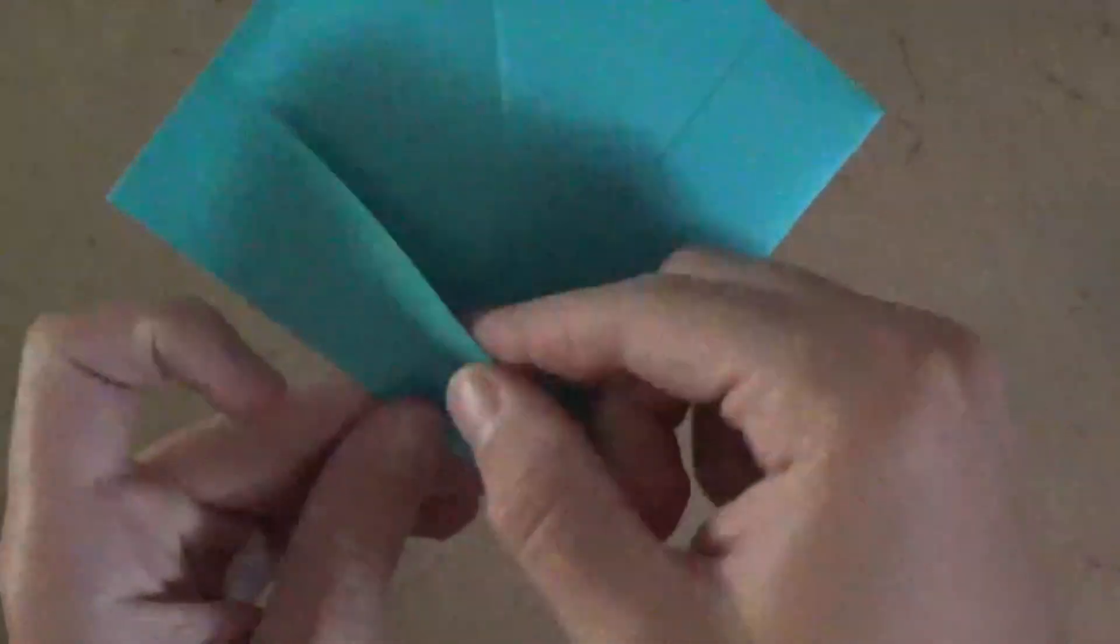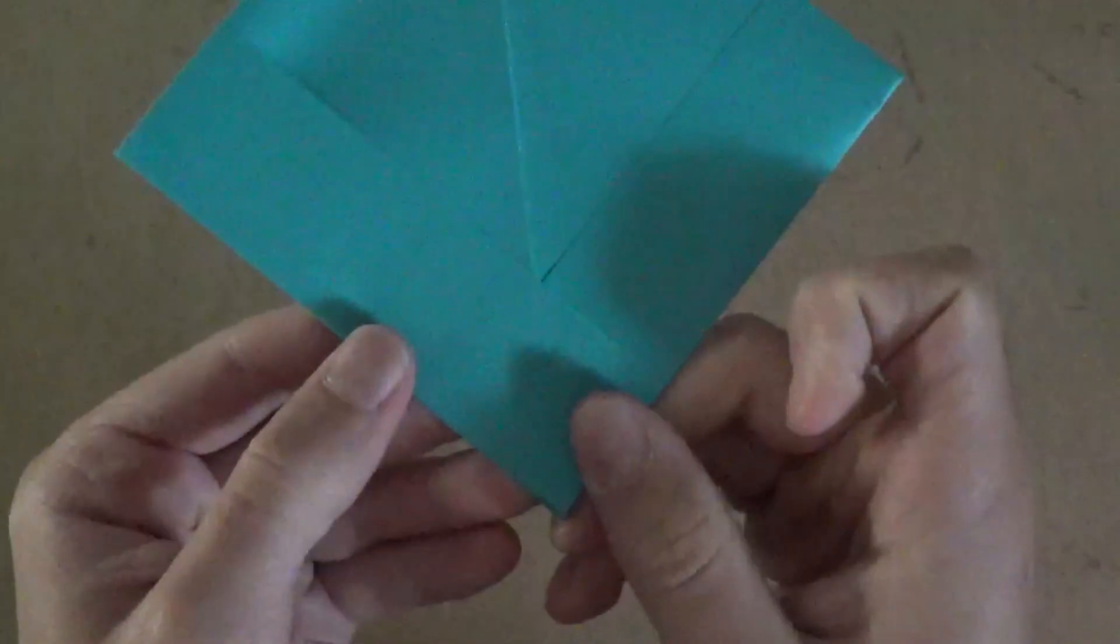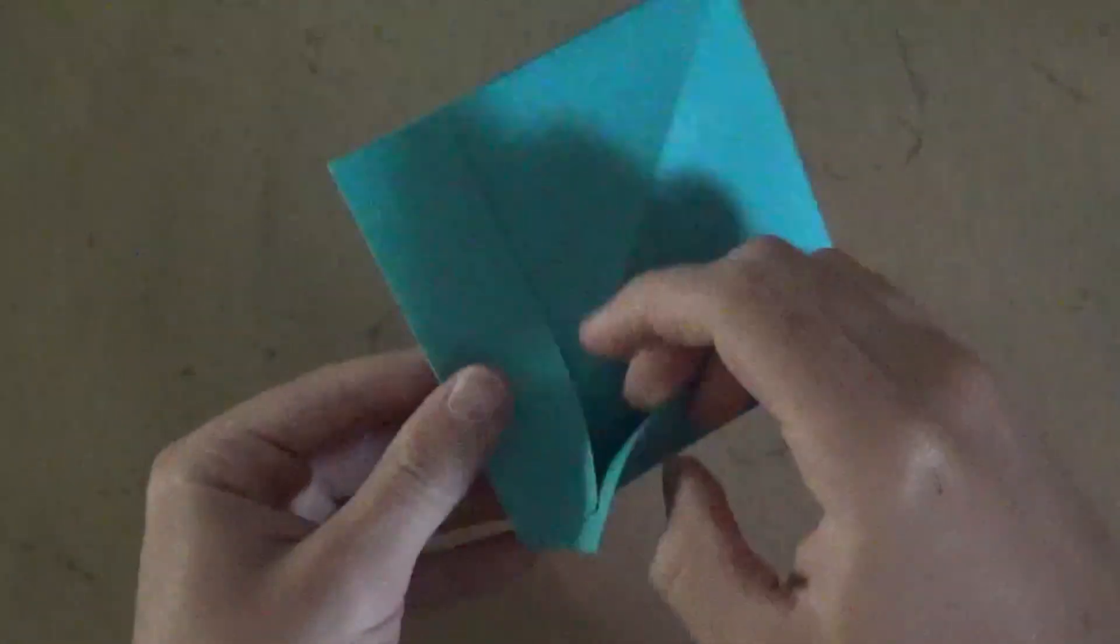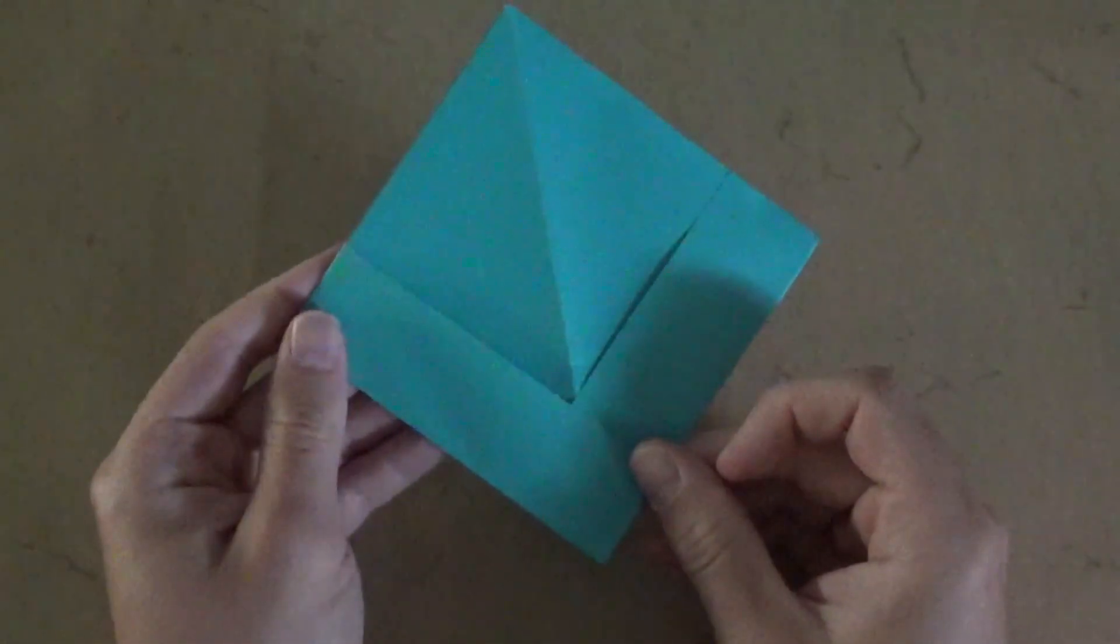What you want to do is open up this pocket here and stick that point inside, and repeat on this side. So open and stick it inside just like that.